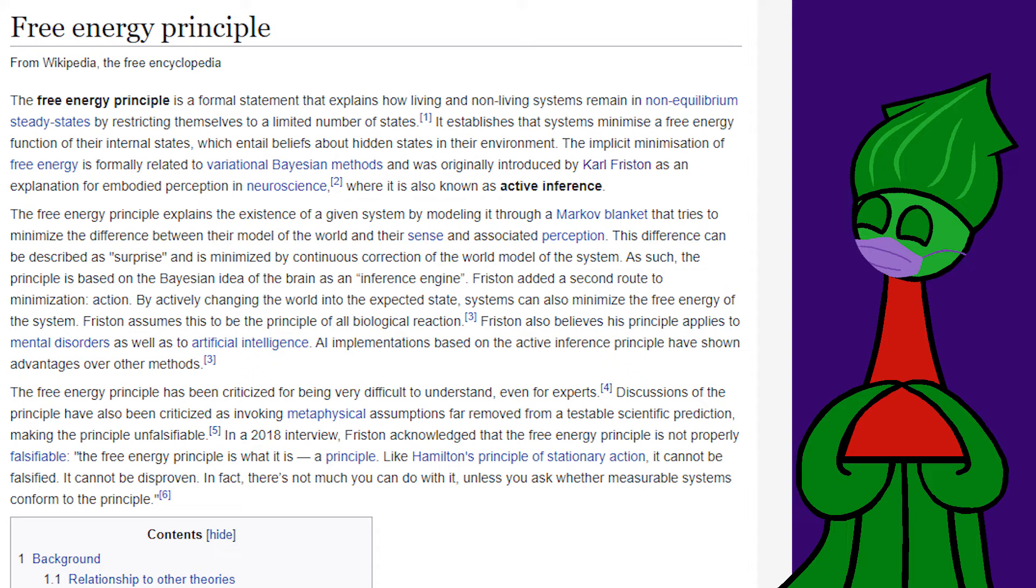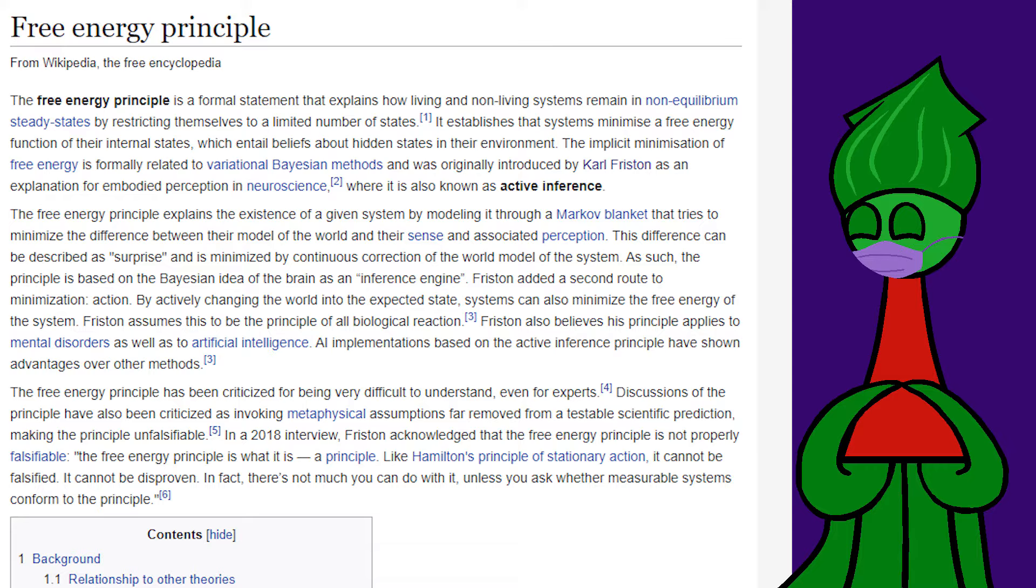A neuroscientist, Fristen, claims sentient beings and some cool robots he simulated work by minimizing a variable called free energy in a mathematical formula from Bayesian statistics.